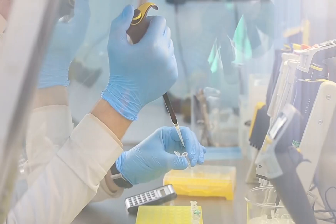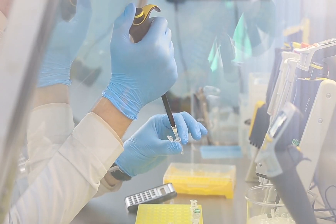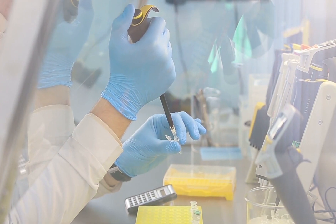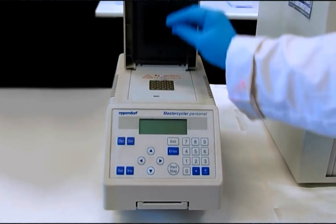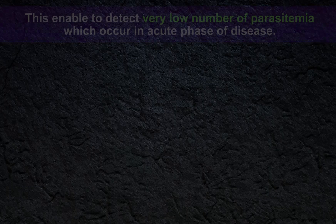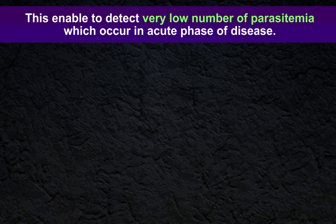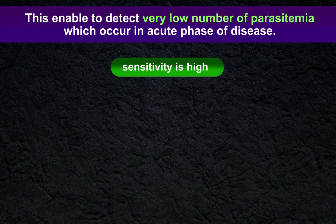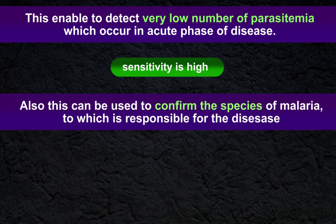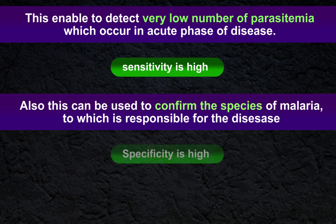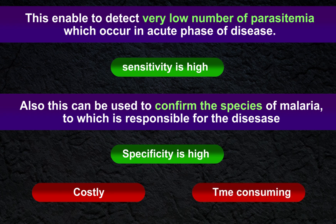Molecular diagnosis is mainly based on polymerase chain reaction, or PCR, which detects the parasitic DNA. This enables detection of very low levels of parasitemia, which can occur in acute phases of disease. Therefore, the sensitivity is high. Also, this can be used to confirm the species of malaria, giving high specificity as well. However, molecular diagnosis is more costly and time-consuming than other methods.